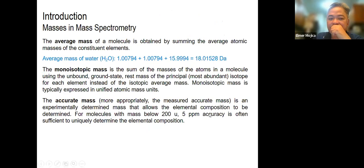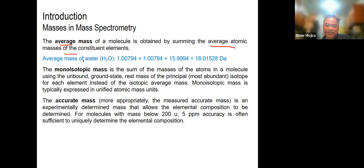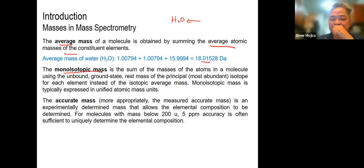If you're going to look at the masses in mass spectrometry, the main thing they look at is average mass, which is obtained by summing the average atomic masses of the constituent elements. When you have water, all you need to do is look at its molar mass, and you'll see fragments that give you the corresponding molar mass of water — like 18.